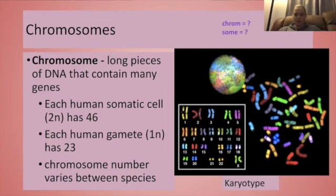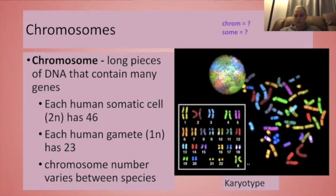We can see that we have some chromosomes that are long and they have the same color, the same types of sequences that these markers have found. They get shorter as we go down, and each is a different color. So we have pairs that match — they have the same genes, but maybe different forms of those genes. One of these came from mom, and one of these came from dad, in each of these 23 pairs. This is a human karyotype, so we have a total of 46 chromosomes, but that chromosome number can vary between species. Chimps, for example, have 48 chromosomes.